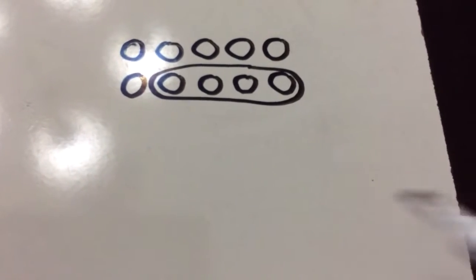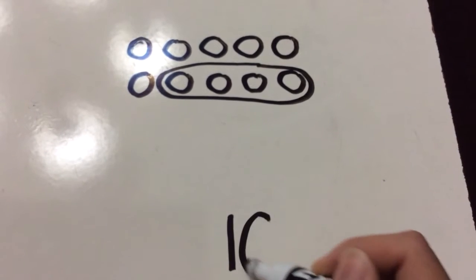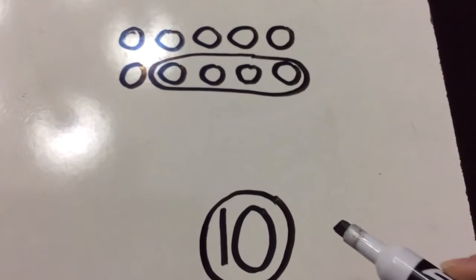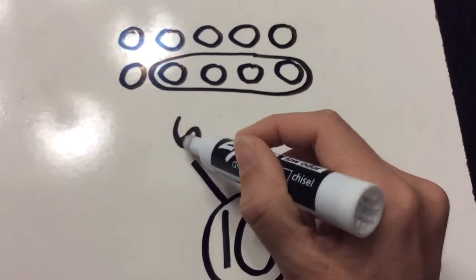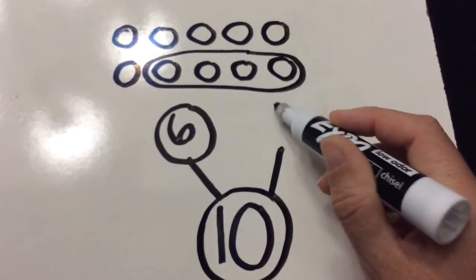Let's show this in a number bond. Ten is my whole number and I had two parts: six and four.